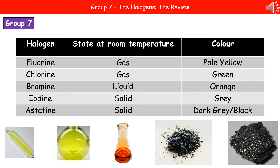Looking at the colours, they get darker as you go down the group. Fluorine is a pale yellow, chlorine is a green gas, bromine is an orange liquid, iodine is a grey solid, and finally astatine is a dark grey or black solid.